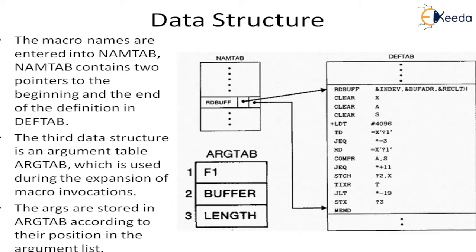The third data structure is the argument table, which is used during the expansion of a macro invocation. The arguments are stored into the argument table according to the position of the argument list — each argument is stored at the position corresponding to its place in that list.